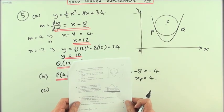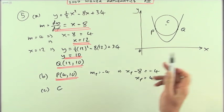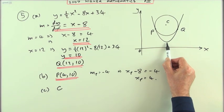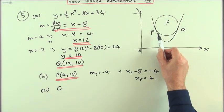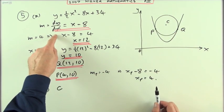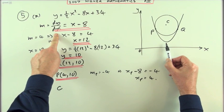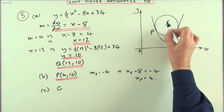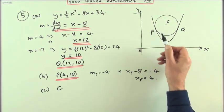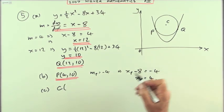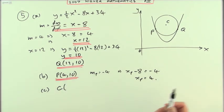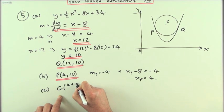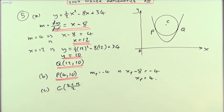For part C, find the coordinates of C, the centre of the circle. Another approach for part B would have been to find the turning point — the derivative equals zero gives x minus 8 equals 0, so x equals 8 is the axis of symmetry. Since P is at 4 and Q is at 12, the centre must be halfway between them, which is 8.